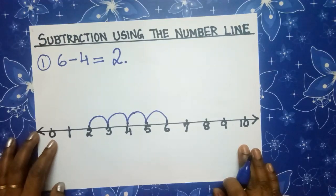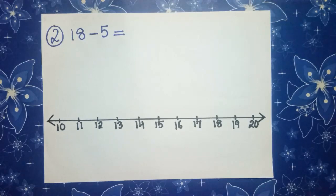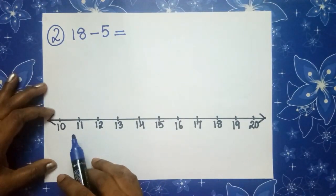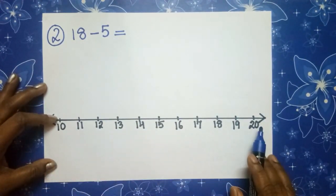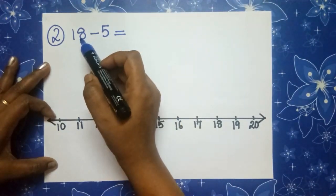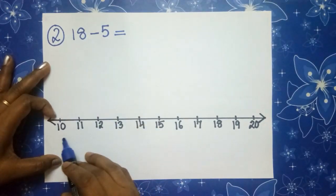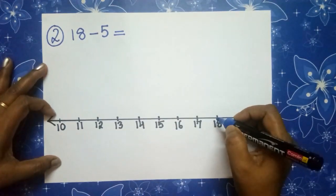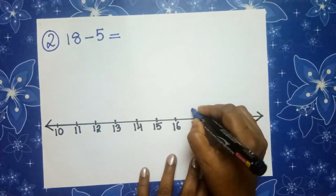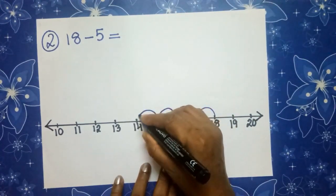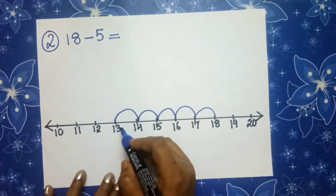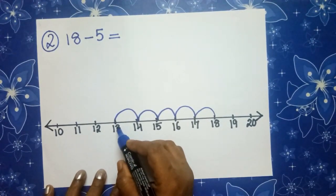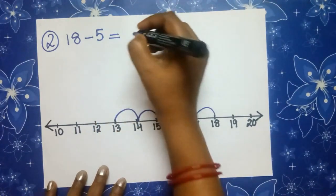Let's try one more example. What is 18 minus 5? Here I have drawn the number line from 10 to 20. The first number is 18, so find it on the number line. How many jumps are we going backward? 5. So from 18, we start: 1, 2, 3, 4, 5. We started at 18 and finished on 13. So the answer is 13. 18 minus 5 is equal to 13.